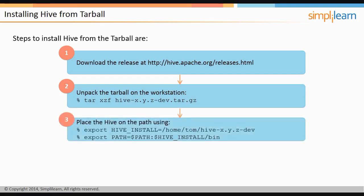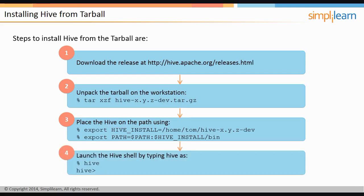Use the following commands to set the path: export HIVE_INSTALL=/home/tom/hive-x.y.z-dev and export PATH=$PATH:$HIVE_INSTALL/bin. Launch the Hive shell by typing the hive command, which displays the hive> prompt.